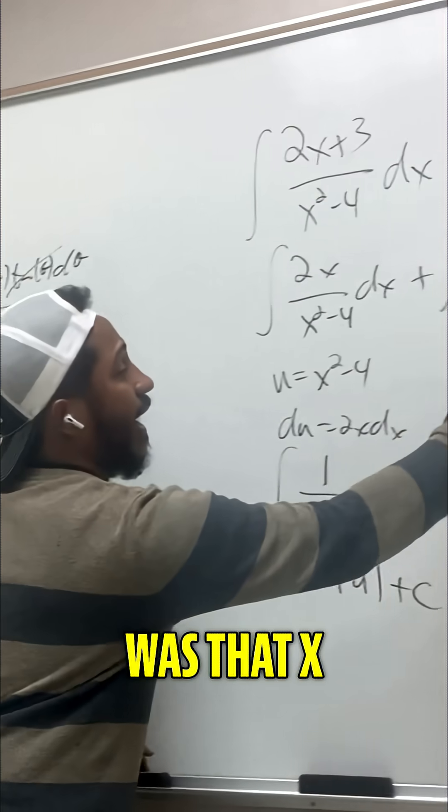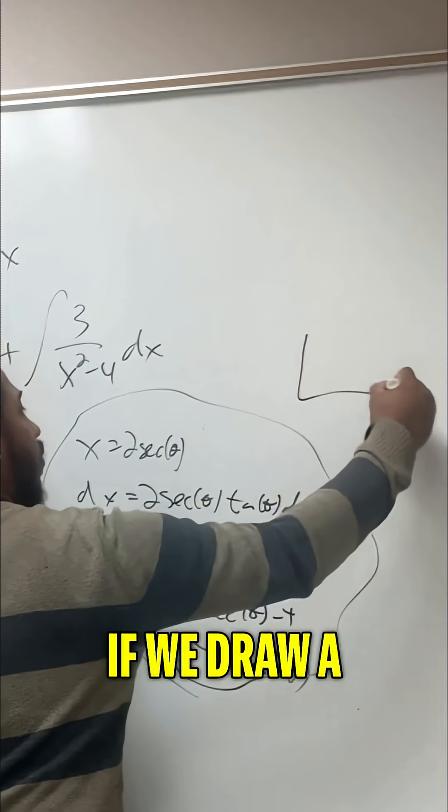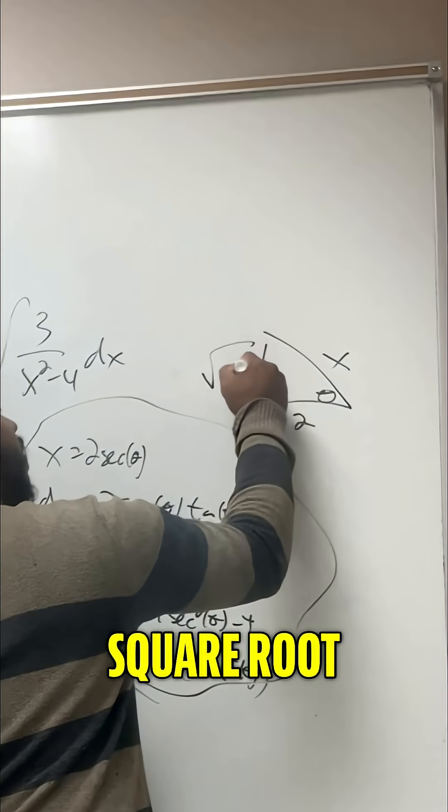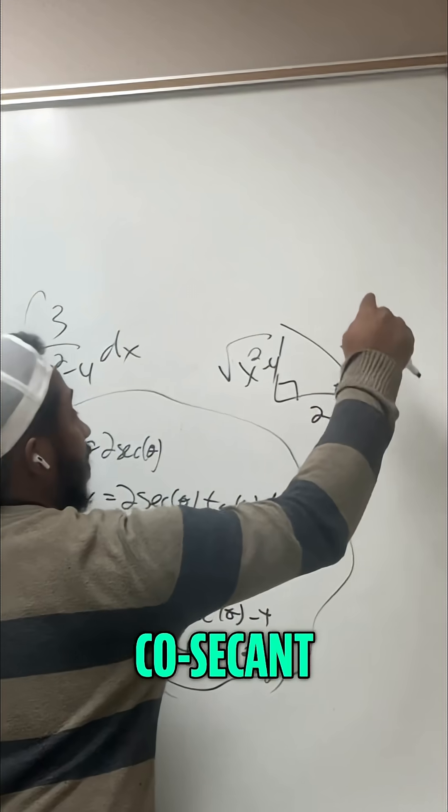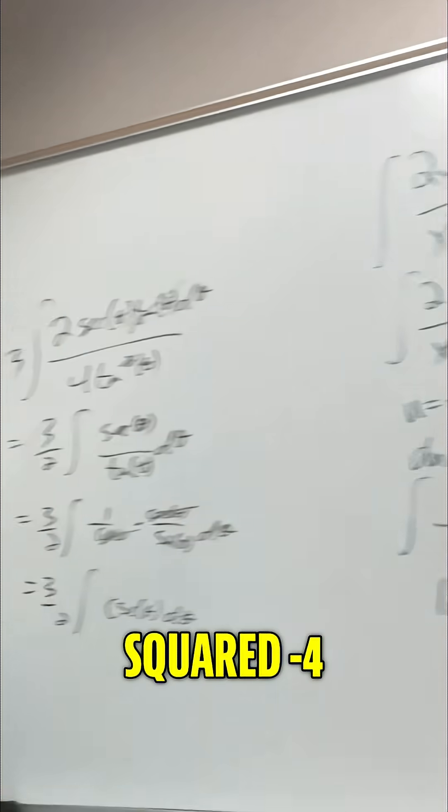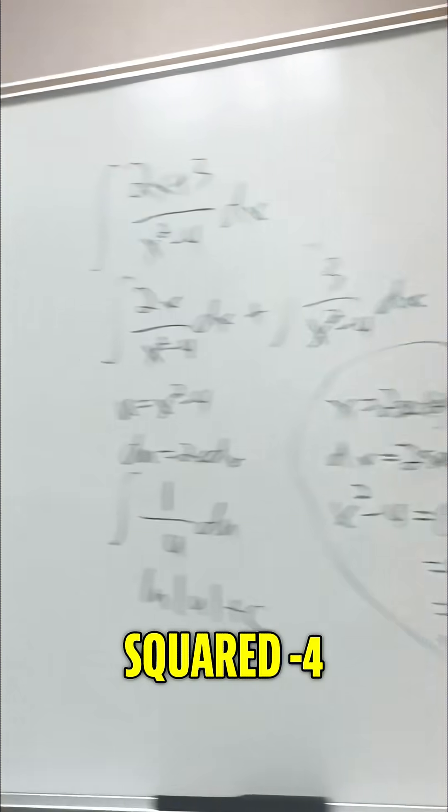So our original substitution was that x equals 2 sec of theta. If we draw a triangle here, x over 2 is the sec. And this becomes the square root of x squared minus 4. The cosecant would be x over the square root of x squared minus 4 minus, and the cotangent would be 2 over the square root of x squared minus 4.